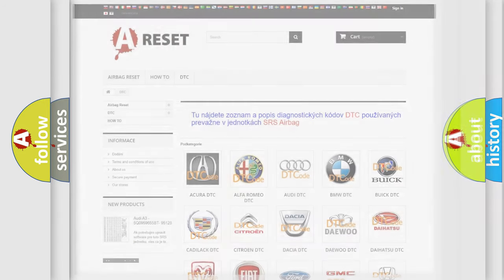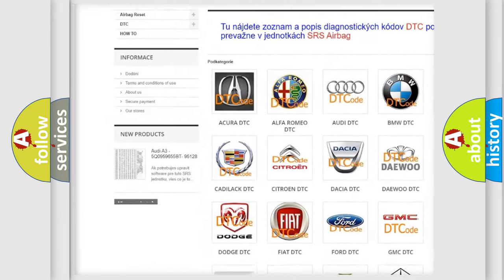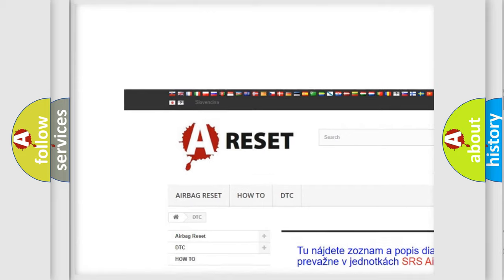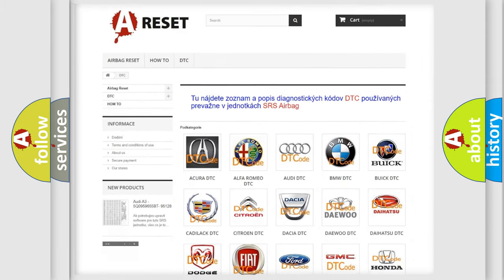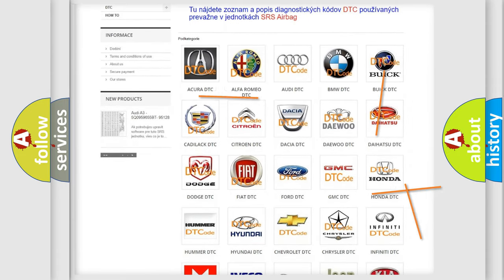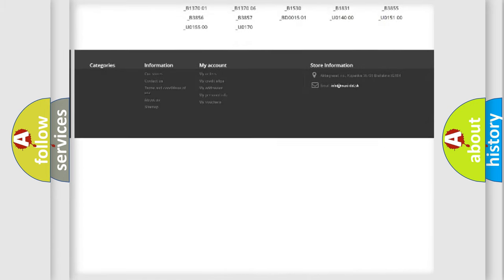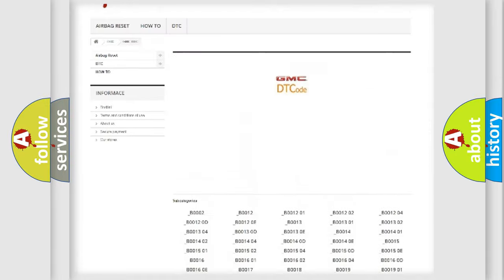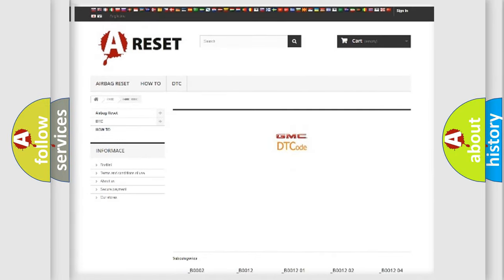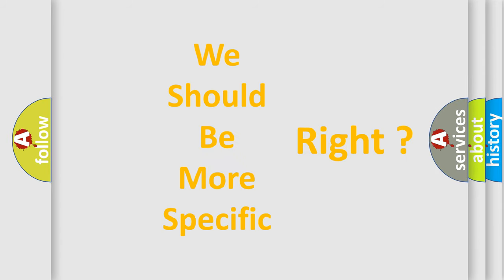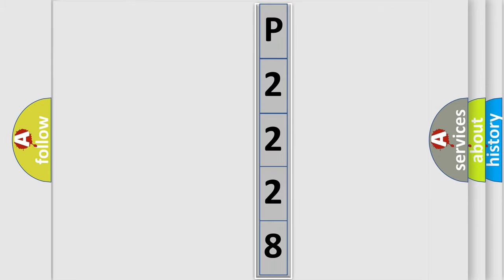Our website airbagreset.sk produces useful videos for you. You do not have to go through the OBD2 protocol anymore to know how to troubleshoot any car breakdown. You will find all the diagnostic codes that can be diagnosed in GMC vehicles, and also many other useful things. The following demonstration will help you look into the world of software for car control units.